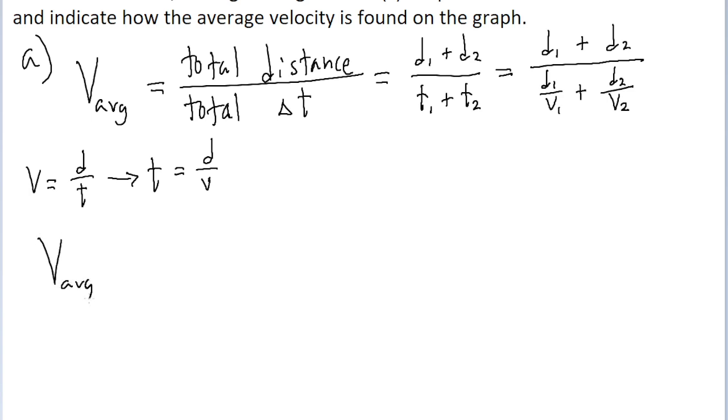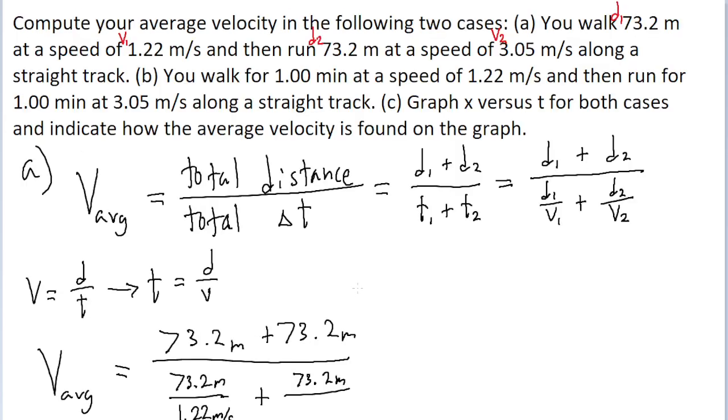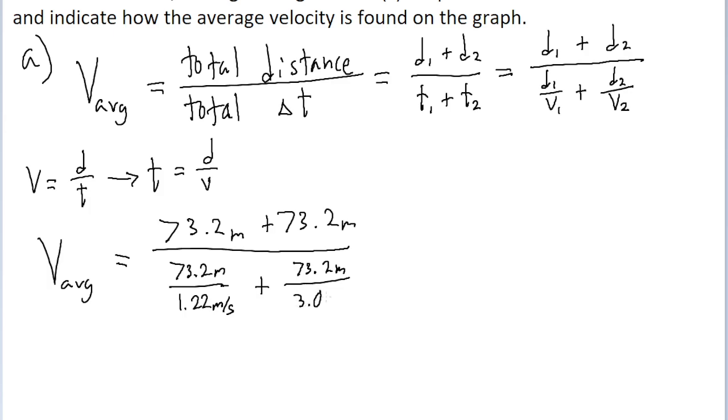So the average speed is equal to 73.2 meters plus 73.2 meters divided by 73.2 meters divided by 1.22 meters per second, plus 73.2 meters divided by 3.05 meters per second. We put this into a calculator, and we find an average velocity of about 1.74 meters per second. And that is our answer for part a.